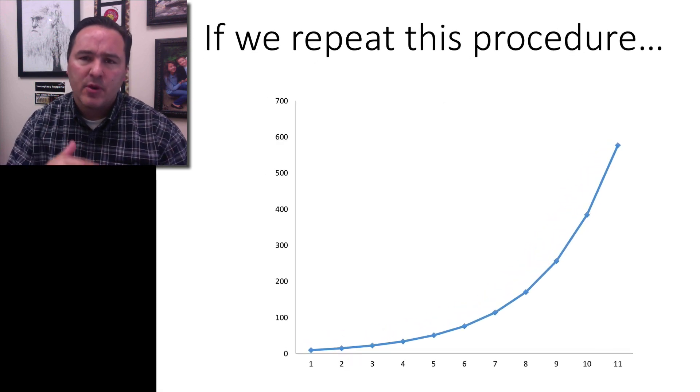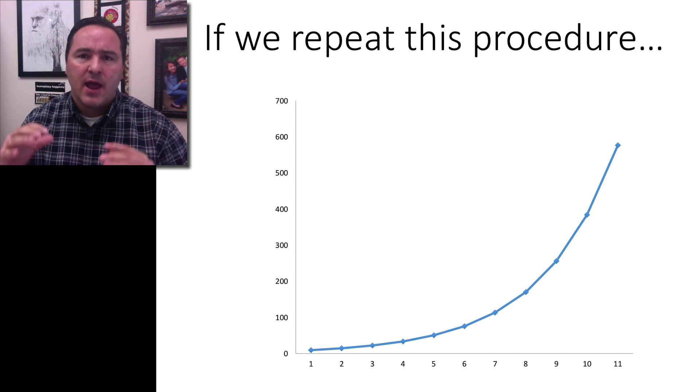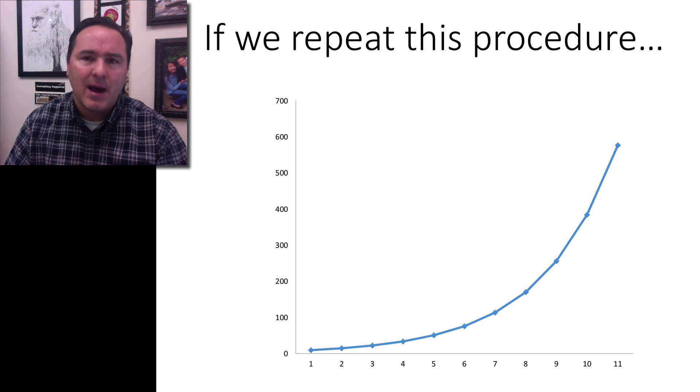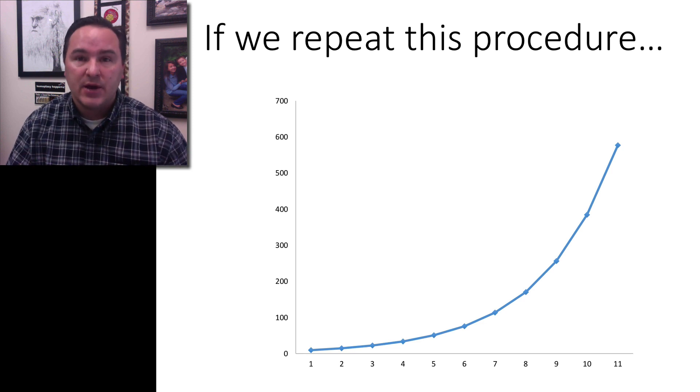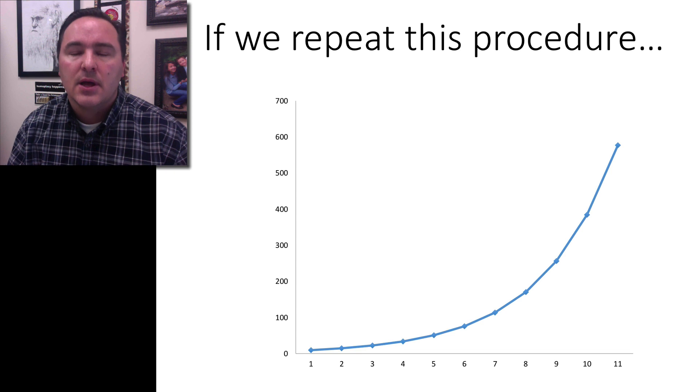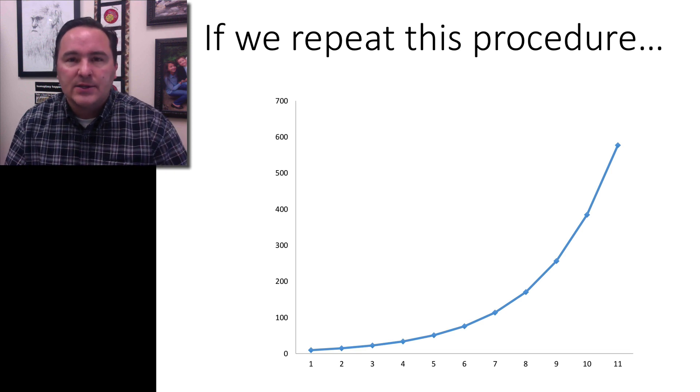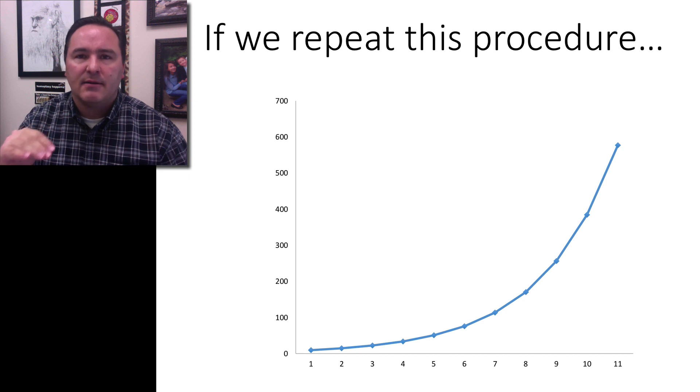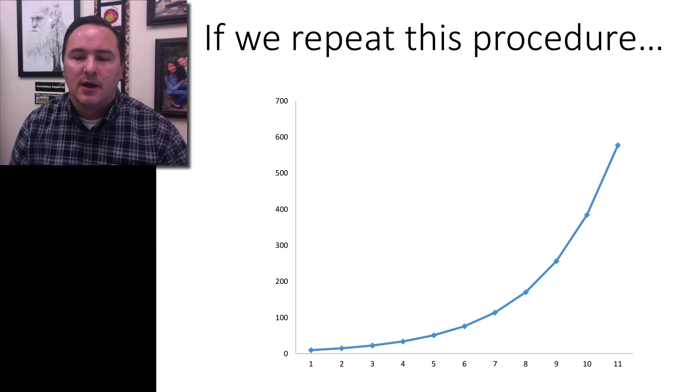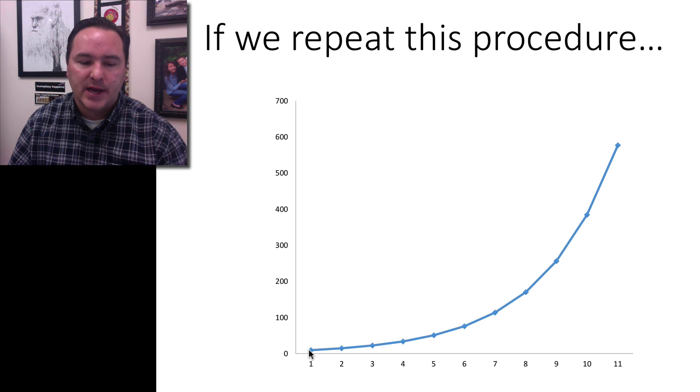If we keep repeating this procedure, where every time we look at the total population and say about half of the total population is probably going to be generated in the next year, we're taking into account birth rate minus death rate. If we did that rate of increase, this is what the graph would look like over time.